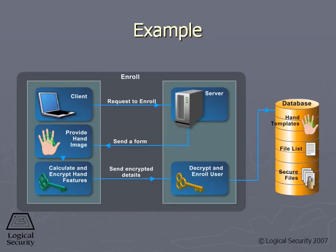Basically what happens is you go through an enrollment process, just like any type of user account being set up — a user account is created on some type of authentication database. The user is asked to put their finger in the reader, and during enrollment they'll do that a few times so the reader can get a very good read on the information. It takes different vectors on the fingerprint and converts that into a binary format.